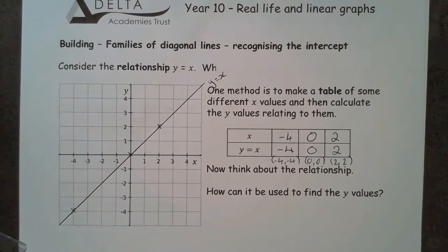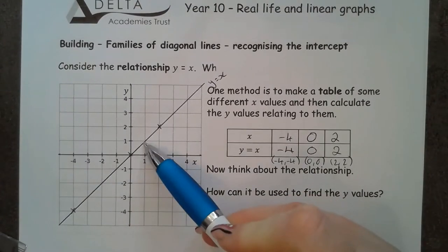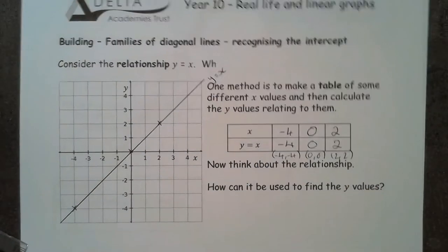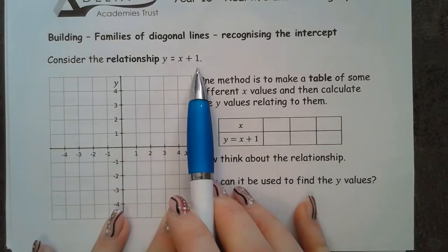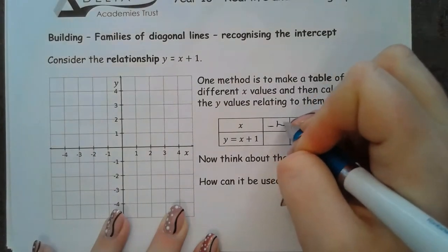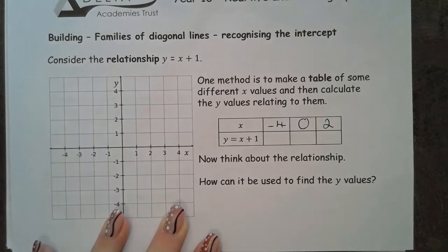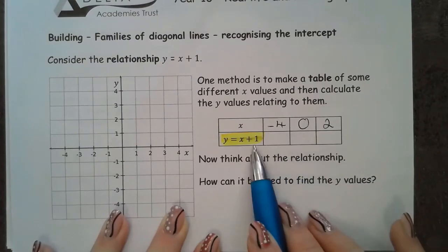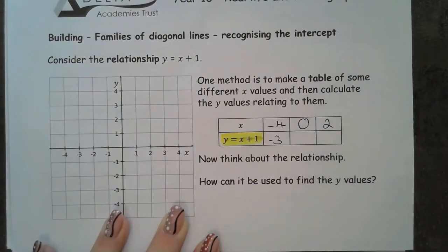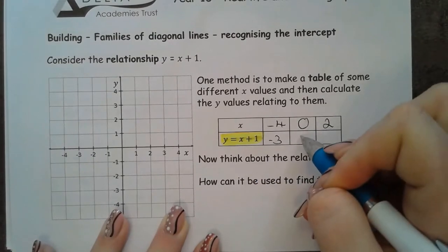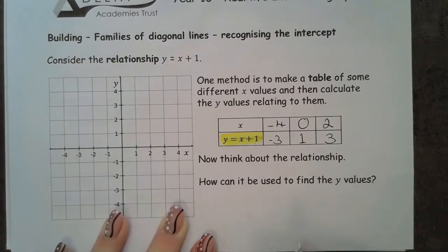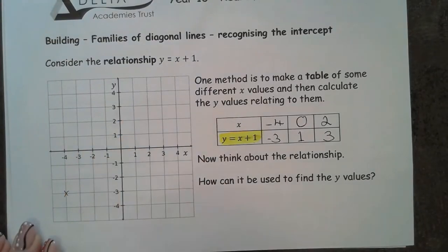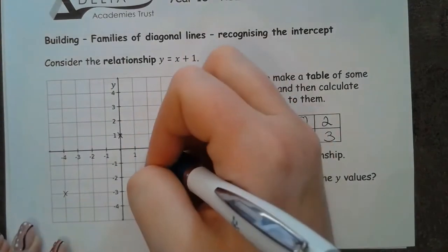We did talk about this one yesterday, so it shouldn't come as any surprise that it is a diagonal which goes across one and up one every single box. What I'm going to do now is change that relationship very slightly — instead, I'm going to look at y equals x plus 1. I'm going to use the same x coordinates as before: 0 in the middle, minus 4, and 2. The only difference is that now I'm looking at y equals x plus 1 instead of y equals x. So I take negative 4 and add 1, giving negative 3. I take 0 and add 1, giving 1. I take 2 and add 1, giving 3.